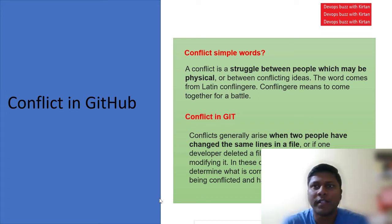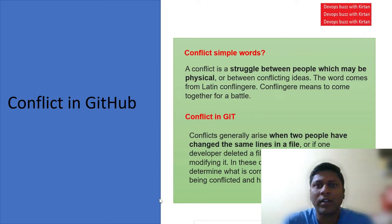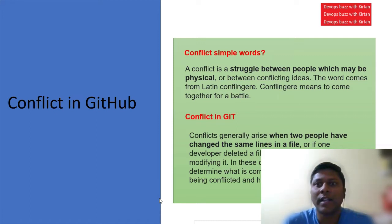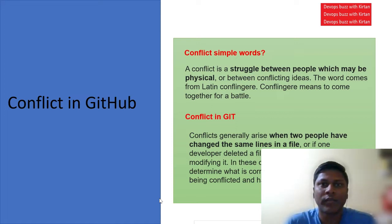Hello friends, welcome to my channel DevOps Boz with Kirtan. Today we'll discuss what is conflict and how to create a PR from GitHub. In simple words, a conflict is a struggle between people, which may be physical or between conflicting ideas. The word comes from the Latin word 'conflindere', which means to come together for a battle.